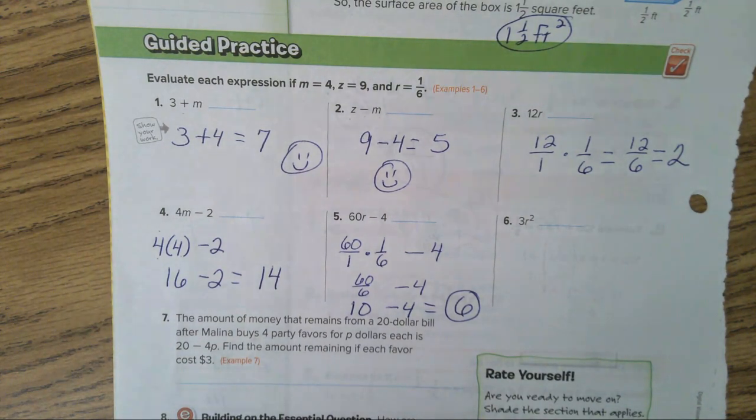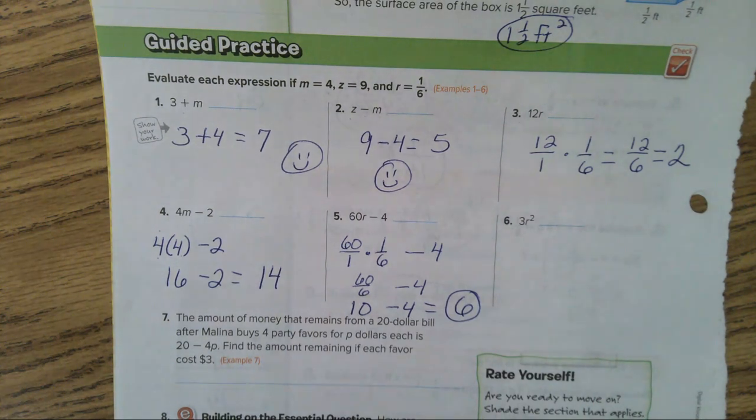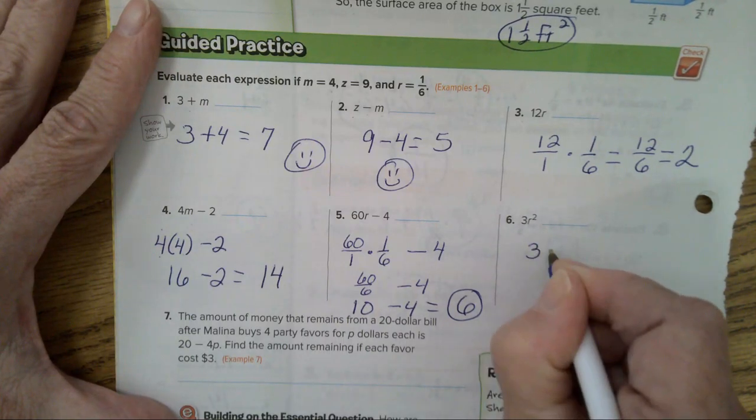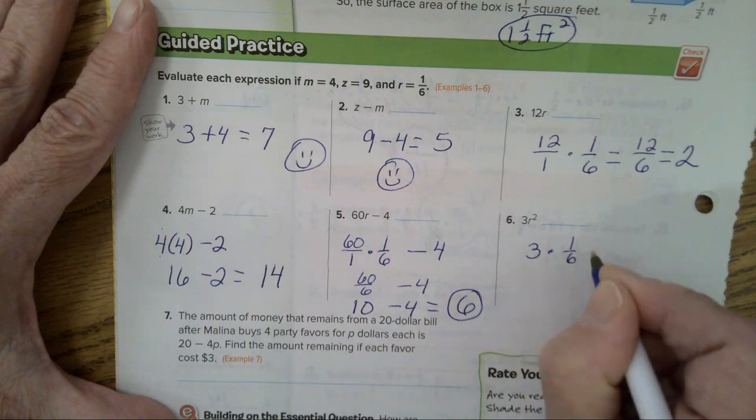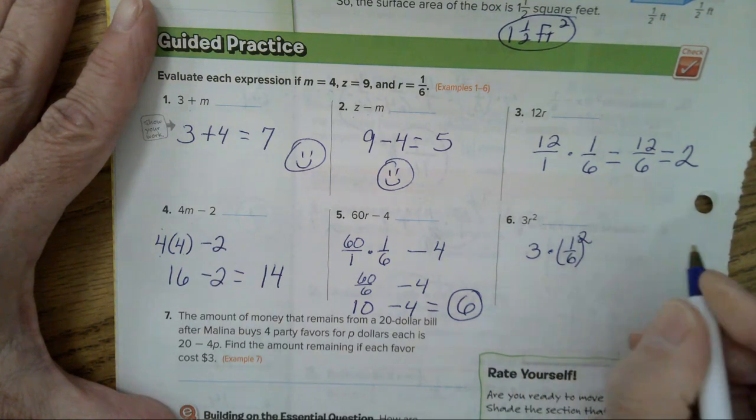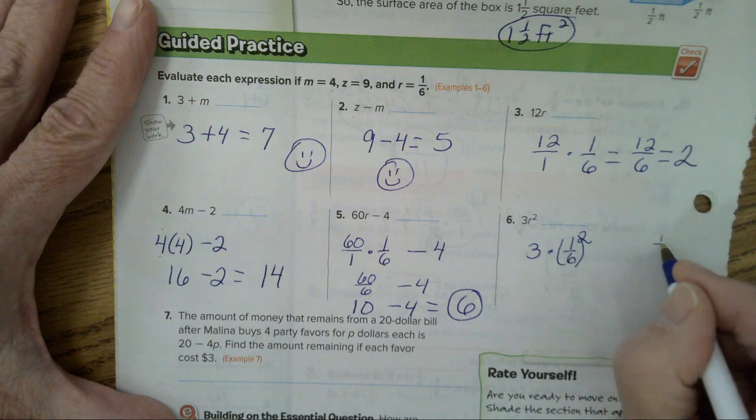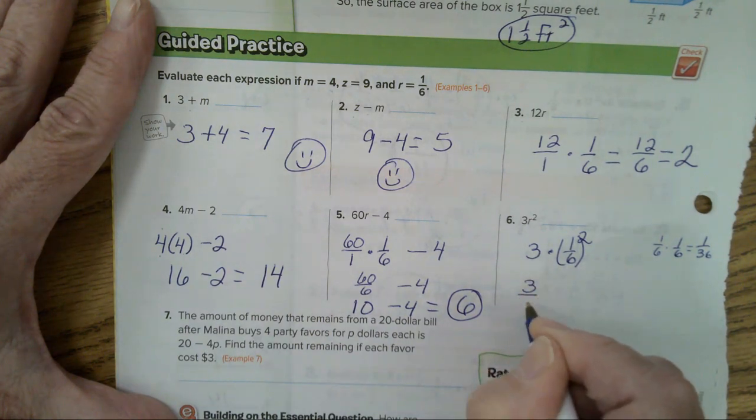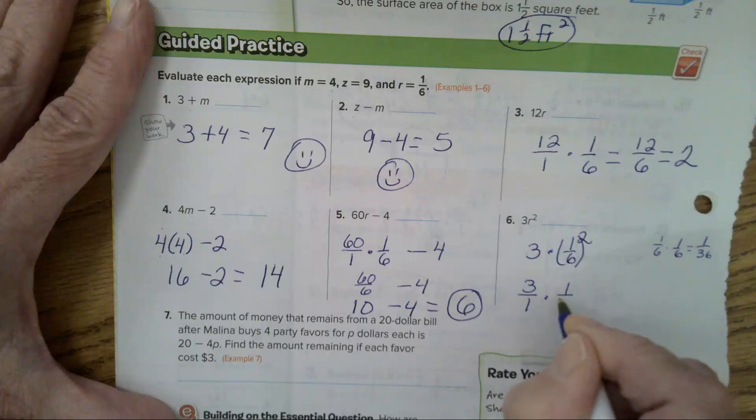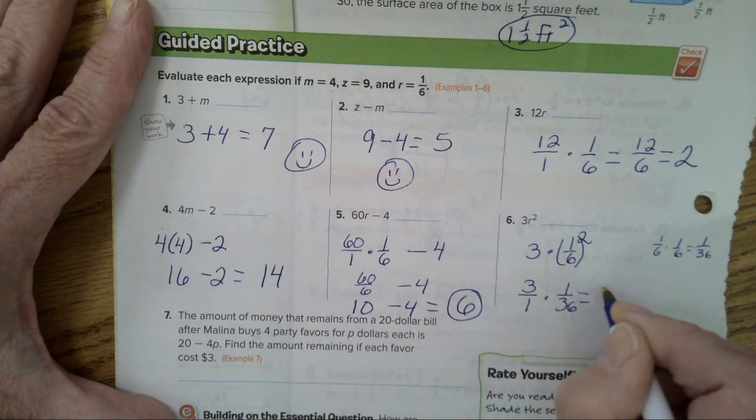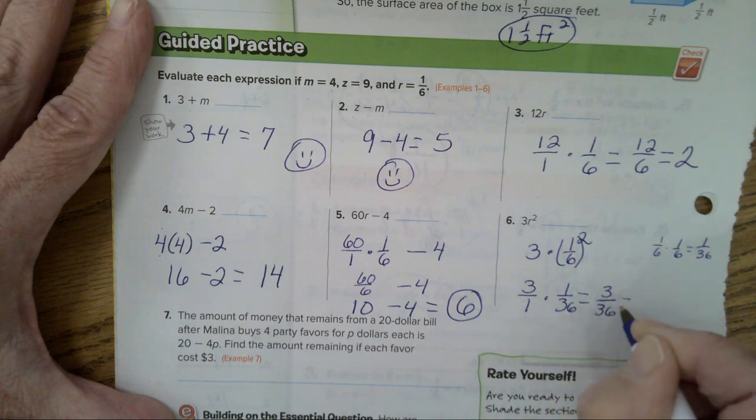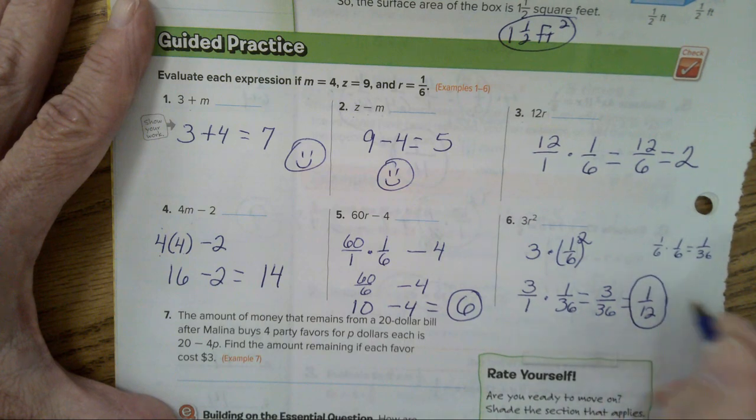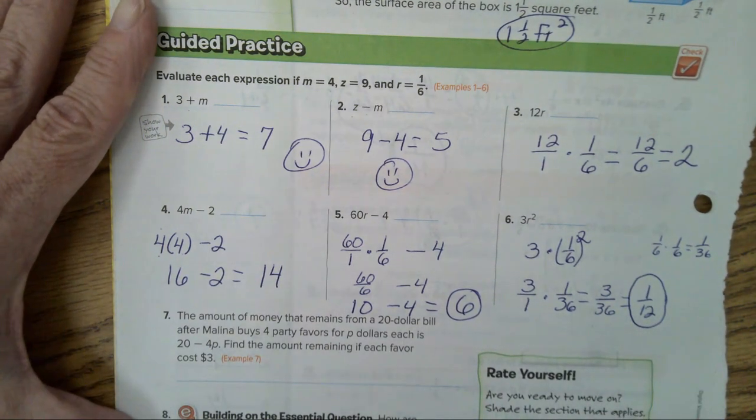Let's go on to number 6. In problem number 6, we have 3 times R squared. 3 times 1 sixth squared. So, 1 sixth times 1 sixth equals 1 over 36. So, I'm going to write 3 as a fraction, 3 over 1 times 1 over 36. That equals 3 over 36, which equals 1, when you simplify it, over 12. 3 divided by 3 is 1, 36 divided by 3 is 12.